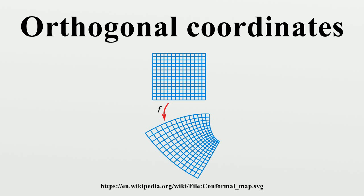Orthogonal coordinates in three and higher dimensions can be generated from an orthogonal two-dimensional coordinate system, either by projecting it into a new dimension or by rotating the two-dimensional system about one of its symmetry axes. However, there are other orthogonal coordinate systems in three dimensions that cannot be obtained by projecting or rotating a two-dimensional system, such as the ellipsoidal coordinates. More general orthogonal coordinates may be obtained by starting with some necessary coordinate surfaces and considering their orthogonal trajectories.